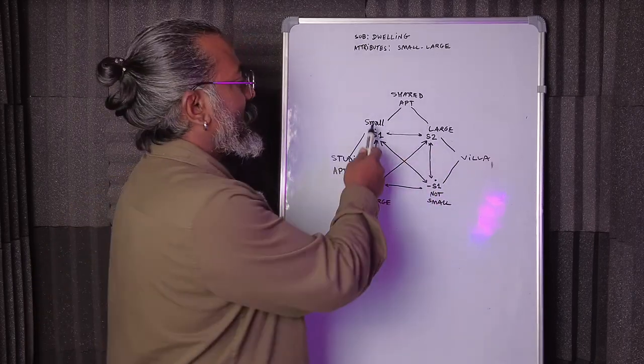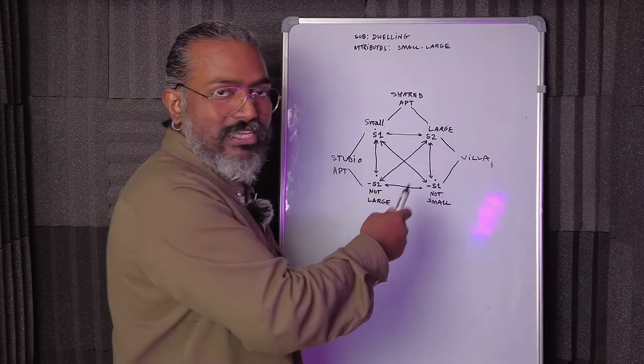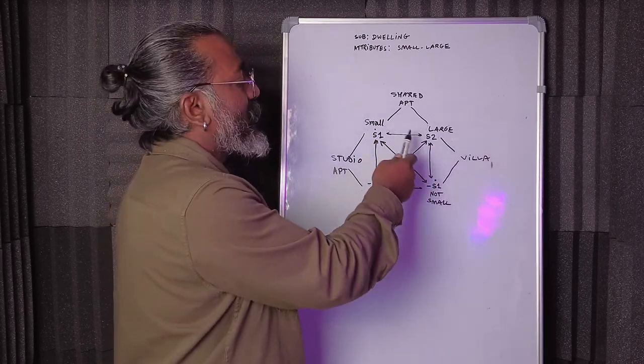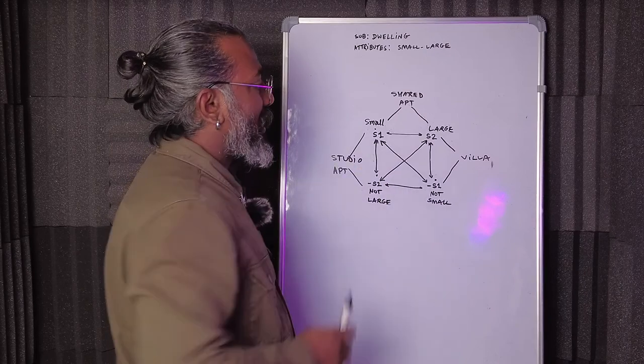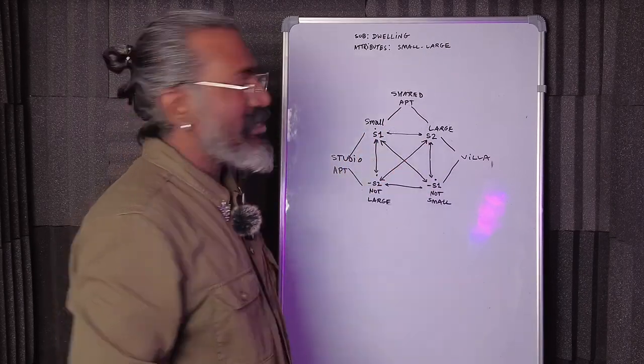see there are two aspects. The bedroom is small, which is corresponding to the larger premises itself, all the facilities itself. So therefore we can say that shared apartment has got two aspects, small and large aspects coming together and staying together.